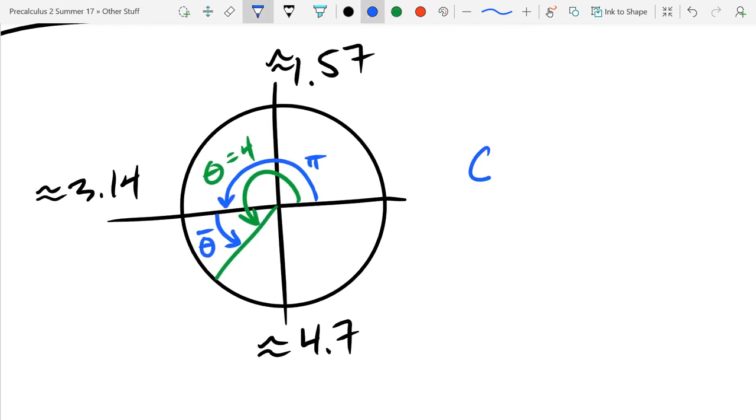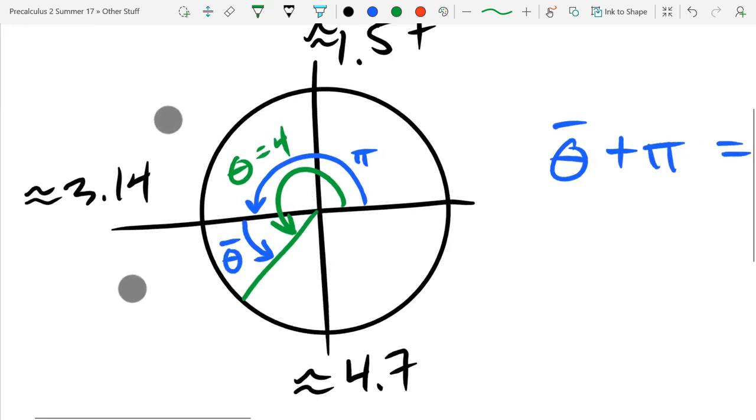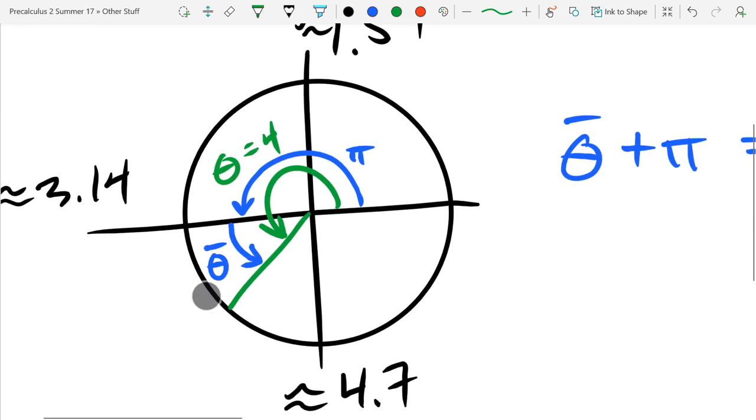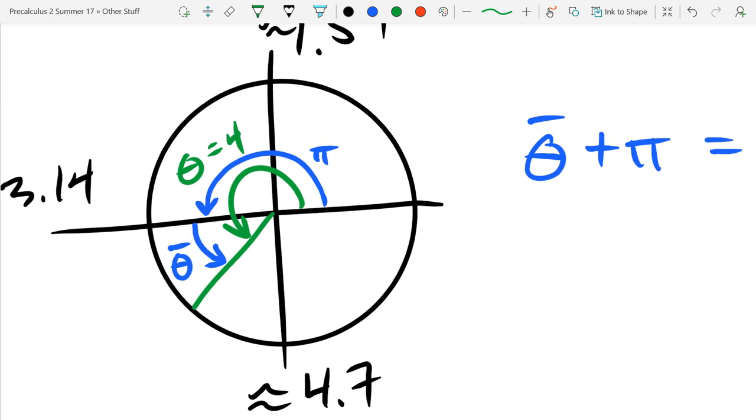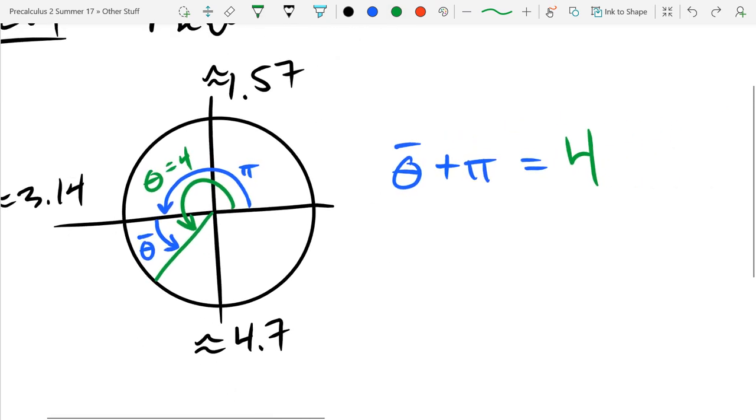I'll write that down right now: θ̄ + π = 4. The two blue angles added together is the same as that single green angle right there. You can just take a minute, look at the picture. It should be pretty clear: rotate π and then another θ̄, and you'll have the same rotation as θ equals 4.